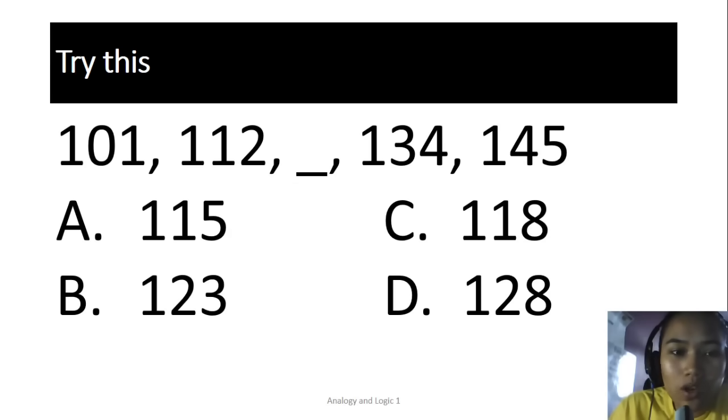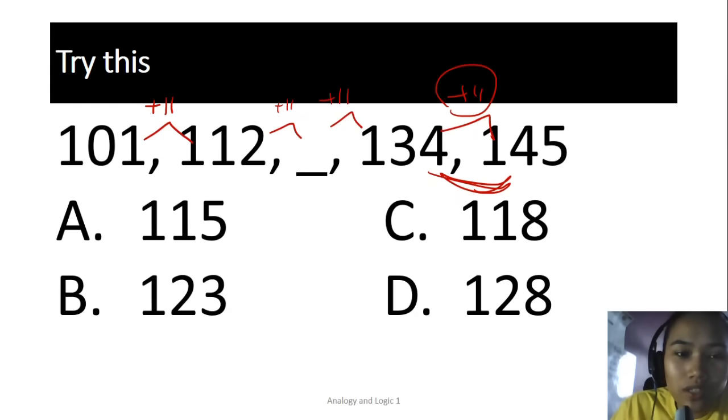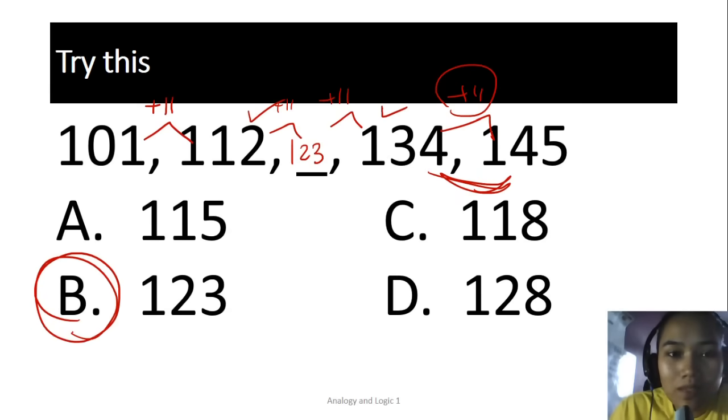In this case, 101, 112. What do I need to do to 101 to make it 112? It could be plus 11. Now, don't immediately add 11 to this. Although it makes sense to add 11. Check it here first. Is this plus 11? Yes. So it's probably plus 11. So 112 plus 11 is 123. Now, even though there's 123 there, don't shade it yet. You need to make sure that 123 plus 11 is 134. Make sure it's correct on both sides. If that works out, then that's the time you get the answer. You really need to be careful because there are multiple patterns sometimes. Make sure the pattern is correct on both sides before you answer.